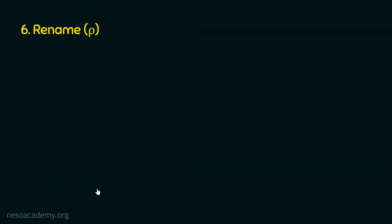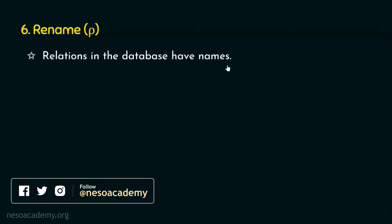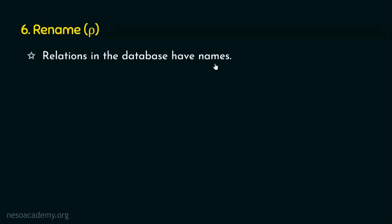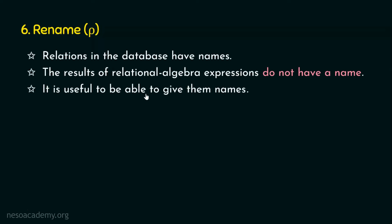The name itself says that this is going to rename — whether it is a table or a column. We know basically a database is a collection of relations, and any relation in a database will certainly have a name. So all the relations in the database have names. Then what is the need for renaming? Relational algebra is a set of operations which takes one or more relations as input and generates a new relation as output. The input relations we refer to with a name, but the output relation will certainly not have a name. The results of relational algebra expressions do not have a name, and hence it is useful to be able to give them names.